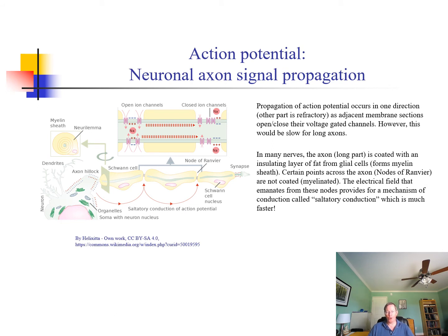Some nervous system neurons can be quite long. For example, motor neurons going from the lower portion of the spinal cord down to muscles in the leg might be many feet long, so those axons are very long. If signal propagation had to occur via depolarization and repolarization from one portion of the membrane to the next adjacent portion, it would be very slow. While that does occur up toward the body of the neuron at the axon hillock, most of the propagation in many nerves is along the myelinated axon, where most of the distance is.